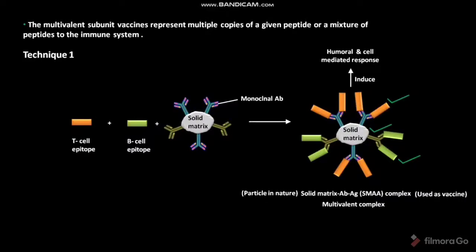The particulate nature of the SMAA complex facilitates phagocytosis of itself by phagocytic cells. So we can say that the particulate nature of the SMAA complex increases its capacity to induce the immune system. Now let us talk about technique 2, which is used to develop multivalent subunit vaccines.